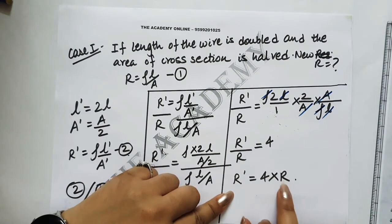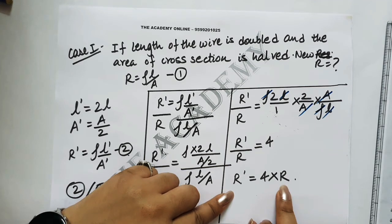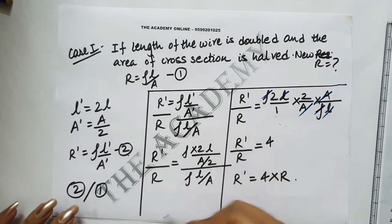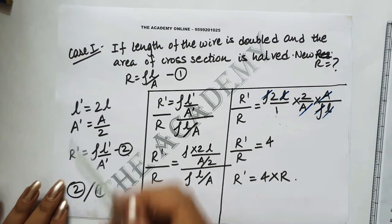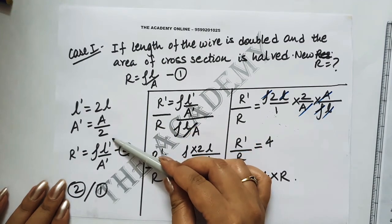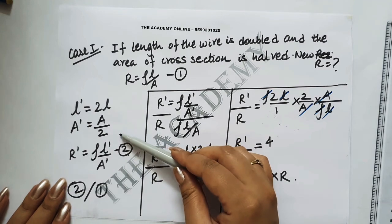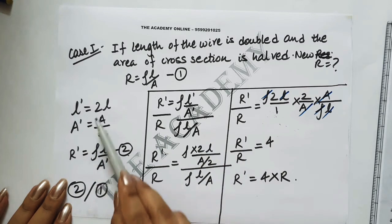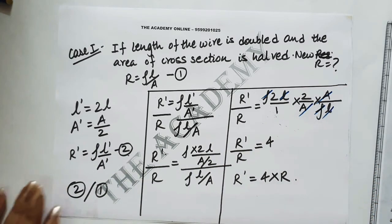So R dash equals 4R. If the original resistance is 5 ohms, the new resistance becomes 20 ohms. This is how you solve it: write the new dimensions in terms of old ones, divide equation 2 by 1, cancel variables, and find the relationship.